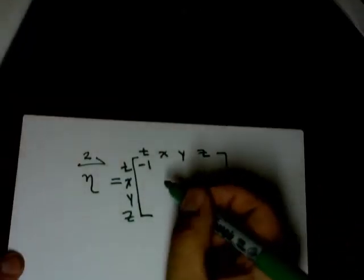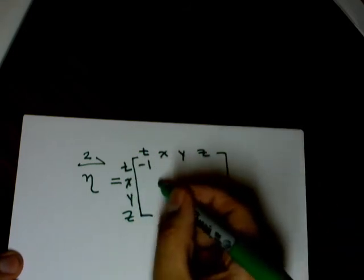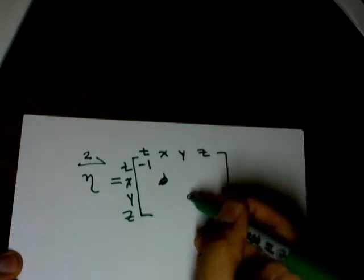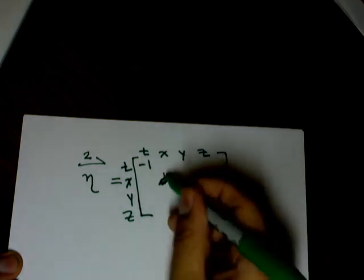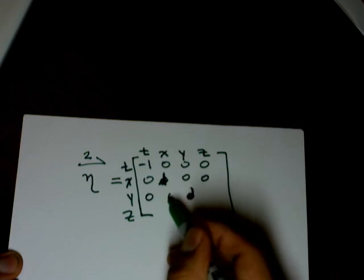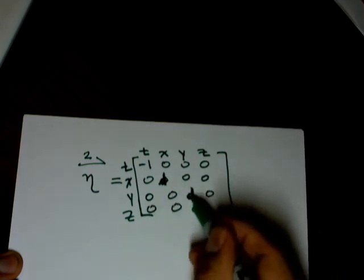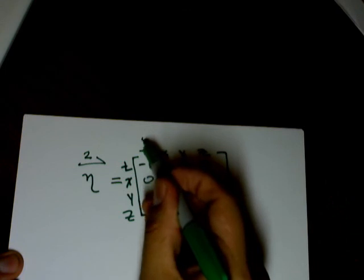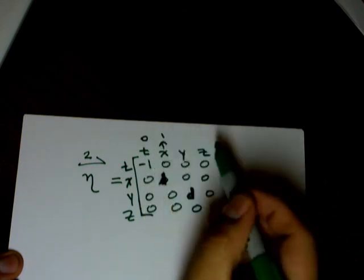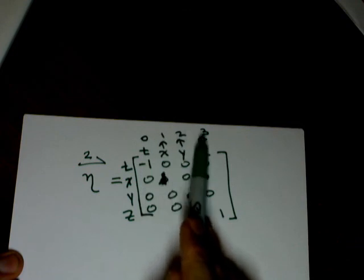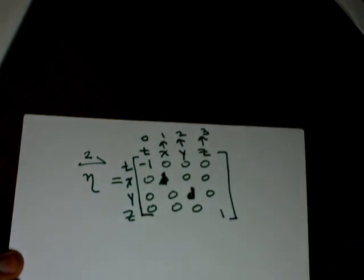And our eta sub 3 3 is 1. So our eta sub 0 0. 1 1 is 1. And these other components, these off diagonals are all 0. This is 1. And of course, this time corresponds to 0. This x corresponds to 1, 2, and 3. When we are values of alpha, that is beta. Okay. So here we got the components for our flat space Minkowski metric.